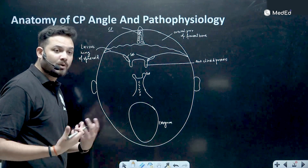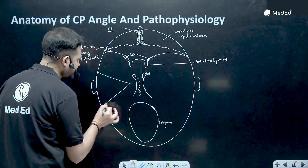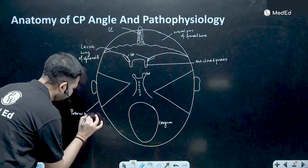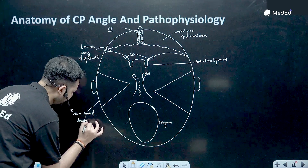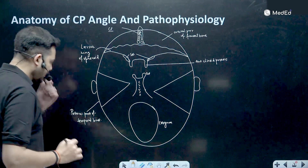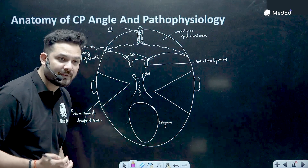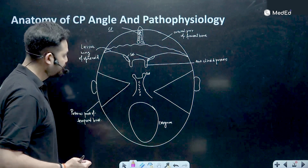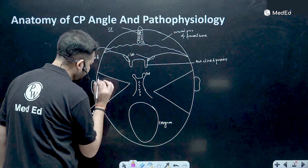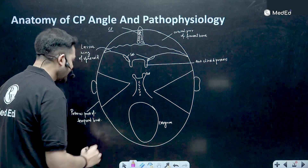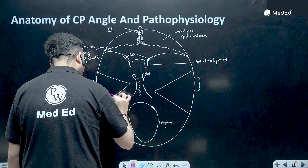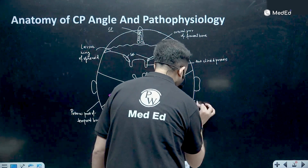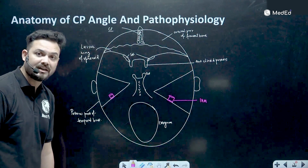Now let's look at very important bones which are important for the ear. The major ear structures are inside these bones which are like inverted pyramids — these are the petrous part of the temporal bone. This is the posterior cranial fossa, this is the middle cranial fossa, and here is the anterior cranial fossa. This petrous bone has a very important opening in the posterior cranial fossa — a canal present on each side, called the internal acoustic meatus, also called the internal acoustic canal.